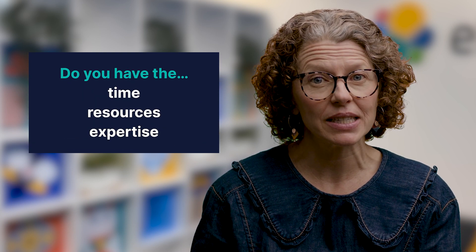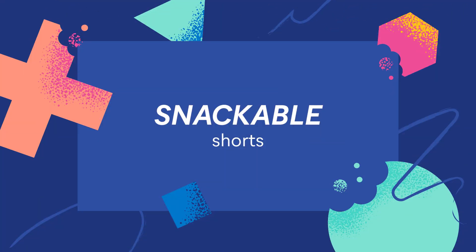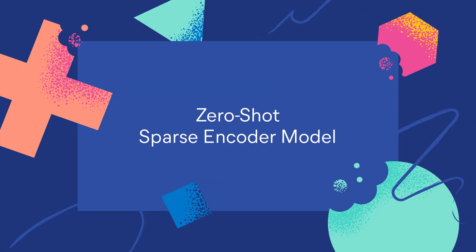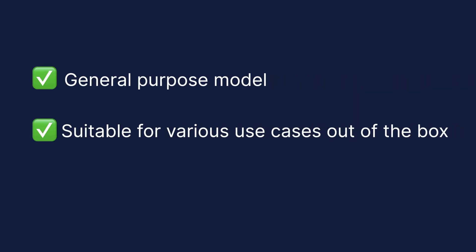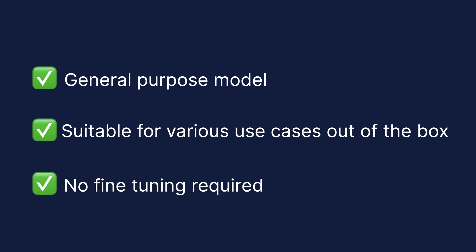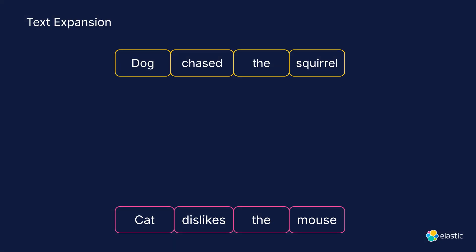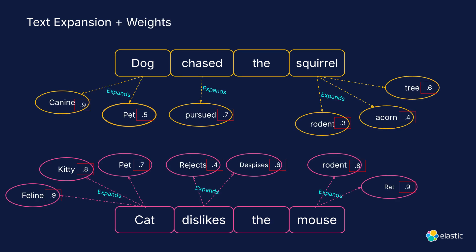An out-of-the-box model? Or do you have the time, resources, and expertise to train your own models? What is a zero-shot sparse encoder model? When you're converting documents and search queries into vectors, you need a machine learning model, and these models usually require training. Zero-shot simply means this is a general-purpose model suitable for various use cases out-of-the-box, with no fine-tuning required. These models can accurately convert documents and search queries into vectors and text expansions without any training.